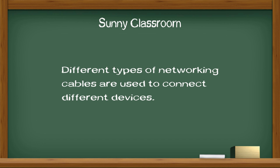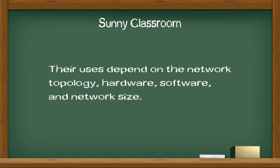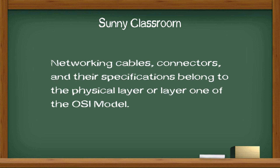Different types of networking cables are used to connect different devices. In networking, the most common cables include coaxial cable, twisted pair, optical fiber, and parallel or serial cables. Their uses depend on the networking topology, hardware, software, and network size. Networking cables, connectors, and their specifications belong to the physical layer, or Layer 1, of the OSI model.